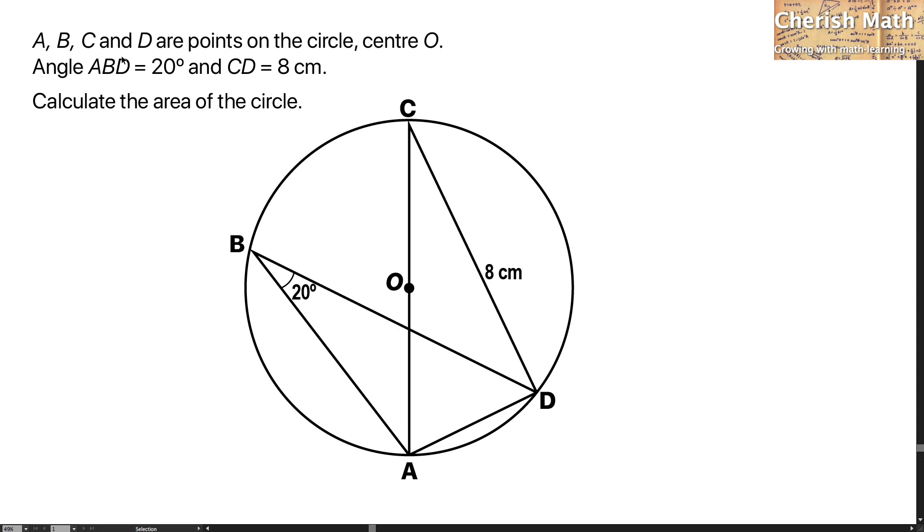A, B, C, and D are points on the circle, center O. Angle ABD is 20 degrees, and CD is 8 cm. Calculate the area of the circle.